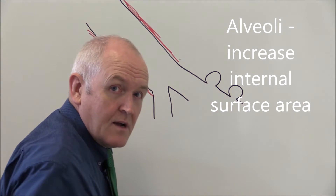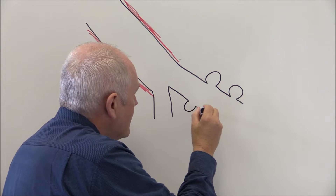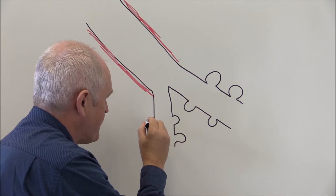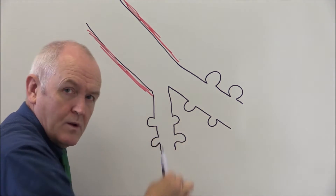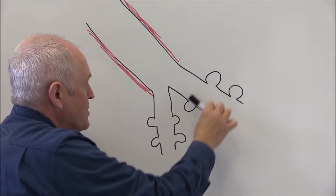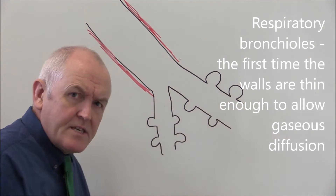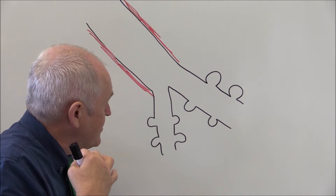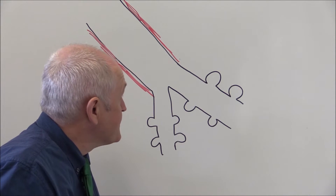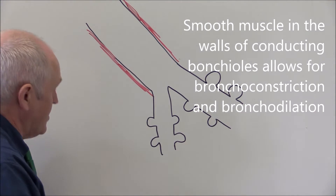These blebs are individual alveoli — one of these is an alveolus — and what they are doing is increasing the surface area of these small bronchial passages. So if this was a terminal bronchiole, these would be respiratory bronchioles. These are called respiratory bronchioles because this is the very first time since the air has been breathed in that the lining is thin enough to allow gaseous exchange.